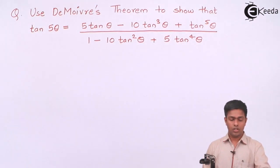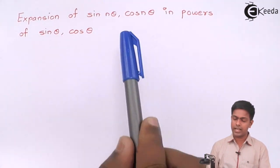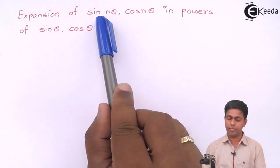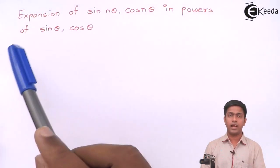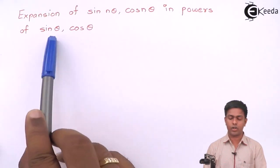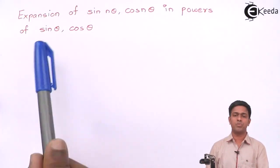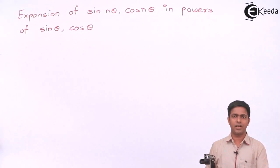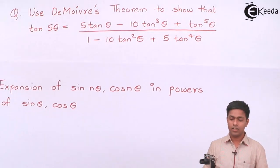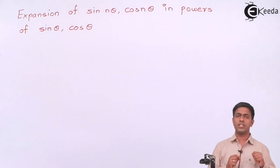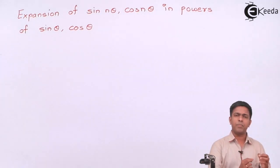The topic is expansion of sin(nθ) and cos(nθ). This means a multiple of θ like tan(5θ) has to be expanded in powers of sin and cos. Here we are expanding sin and cos, so the expansion will be in terms of sin and cos. Similarly, if we have tan on the left-hand side, the expansion is in terms of tan. In short, this process is useful whenever we want to expand any multiple of θ in powers of trigonometric functions.